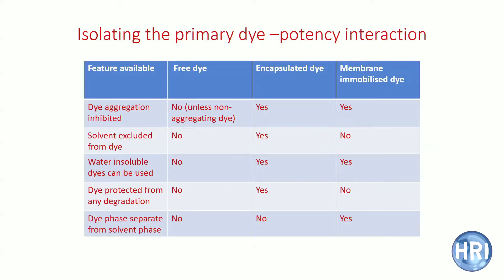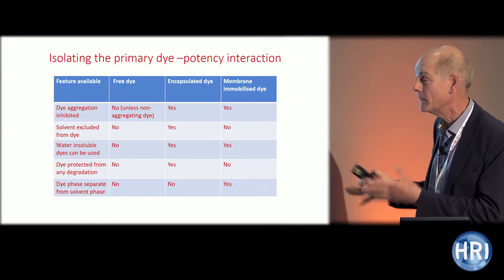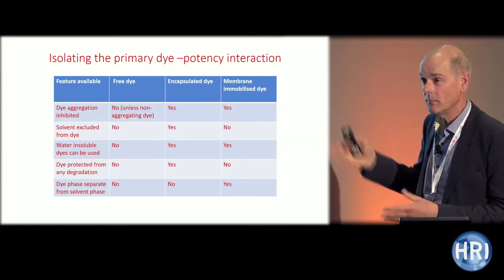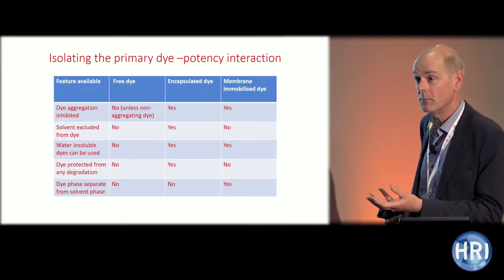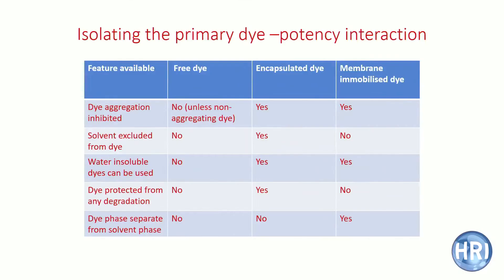Using immobilized dyes, you can't exclude solvent, but you can separate the dye phase from the solvent phase — a solid dye phase and a liquid solvent phase. You can do clever things like adding ascending potencies with the dye still in place, so it's not being diluted. With free dye, unless you have a non-aggregating dye, you can't inhibit aggregation, but you can with encapsulated and immobilized dyes.